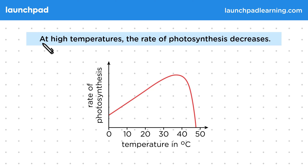Why is it that there's no more photosynthesis when we get to this high temperature? Photosynthesis is controlled by enzymes. The diagram on the left shows a normal enzyme that is still complementary in shape to its substrate.